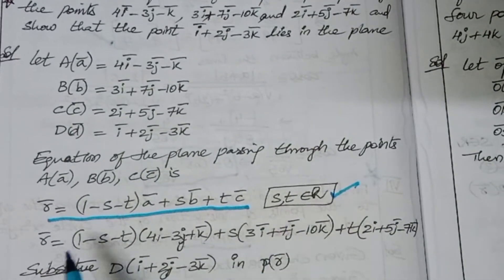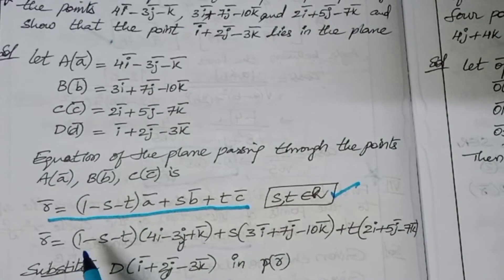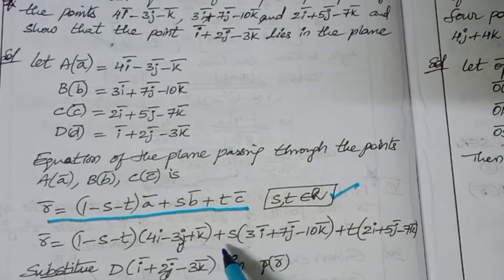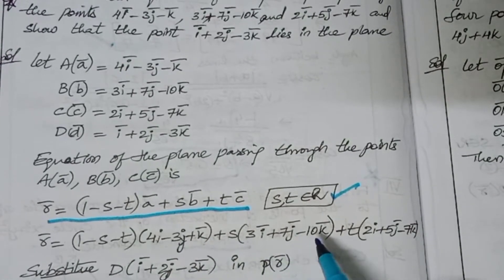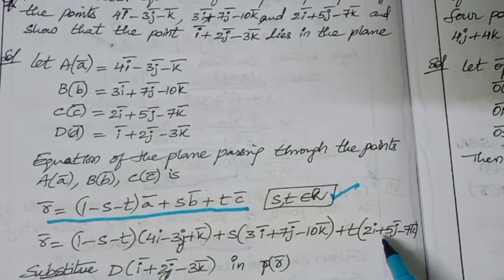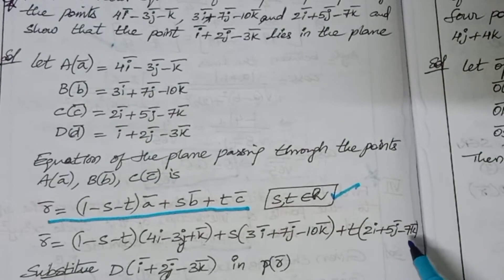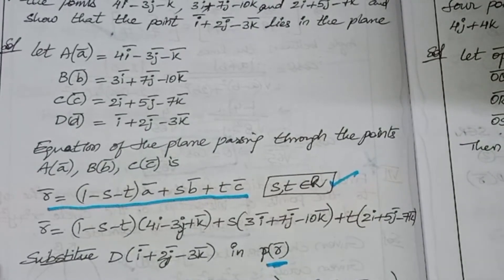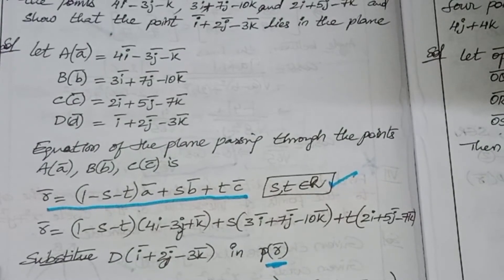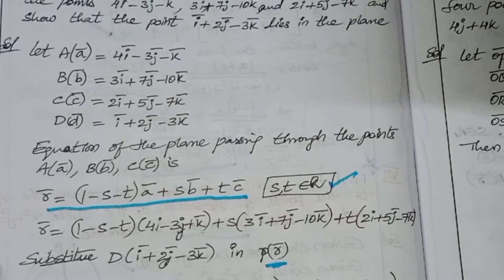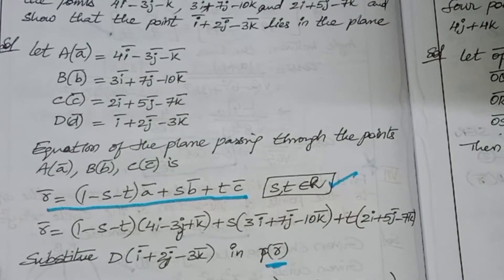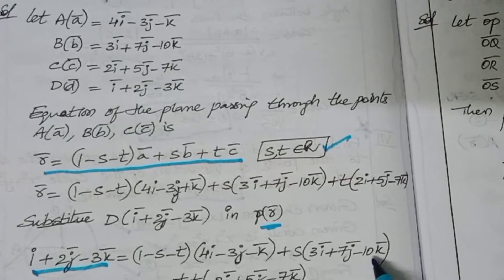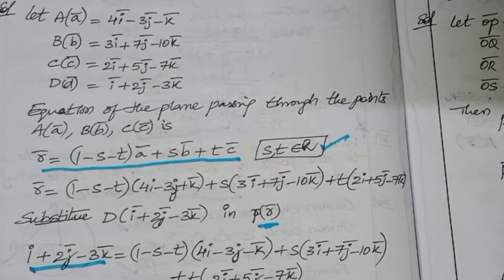Substituting the values: r = (1 minus s minus t)(4i minus 3j plus k) + s(3i minus 7j minus 10k) + t(2i plus 5j minus 7k). Now substituting d in this vector equation: i plus 2j minus 3k = (1 minus s minus t)(4i minus 3j minus k) + s(3i plus 7j minus 10k) + t(2i plus 5j minus 7k).